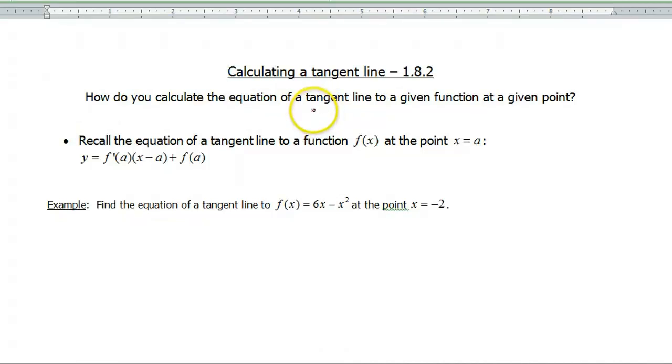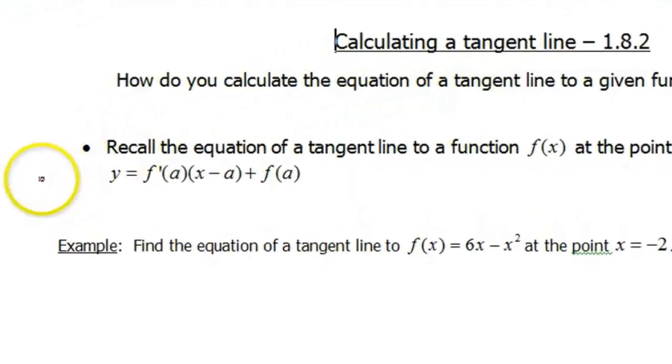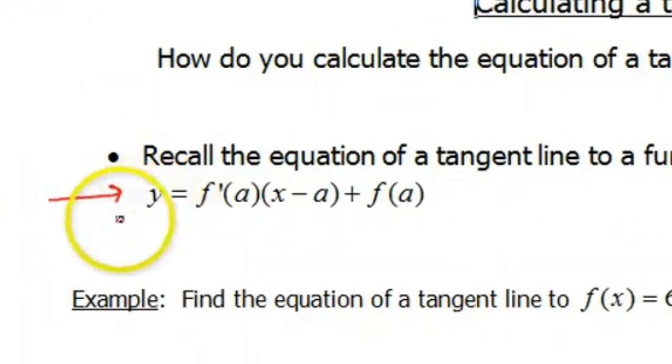So recall the equation of a tangent line to a function f of x at the point x equals a is given by this formula here. y equals f prime of a times x minus a plus f of a.